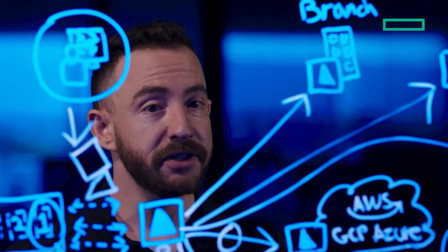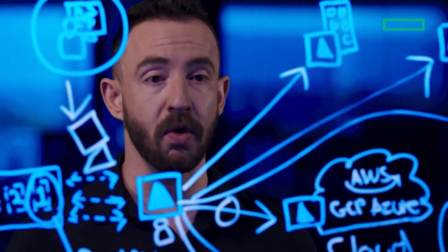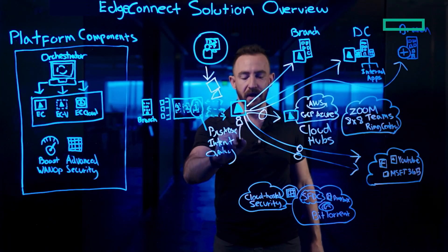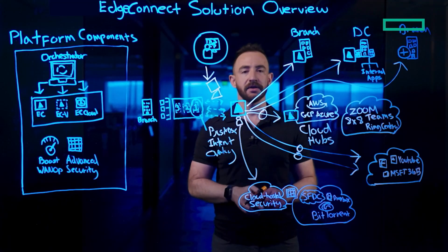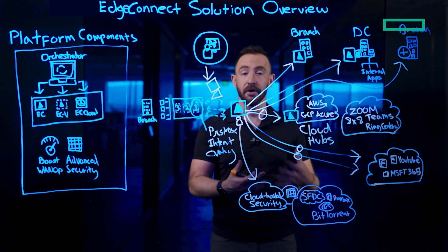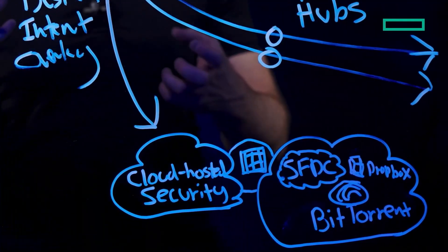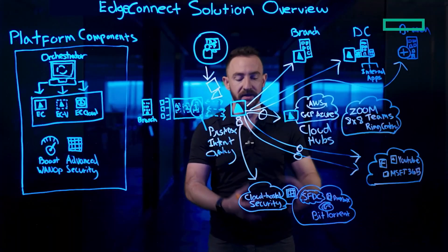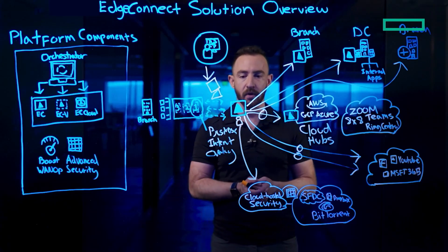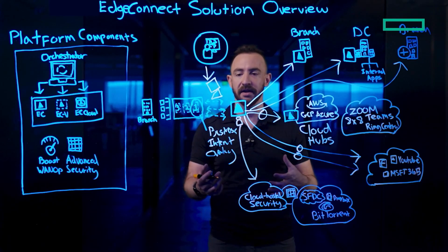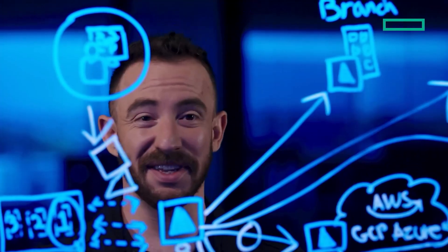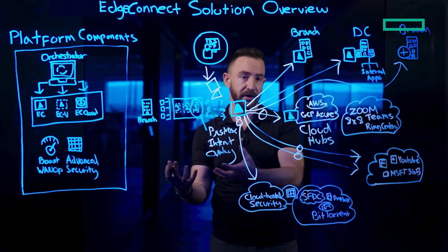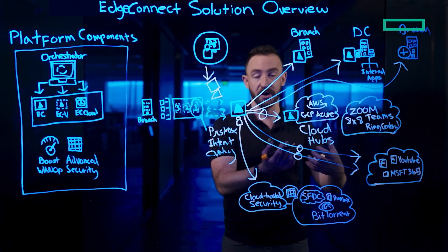For applications that require deeper inspection, or for connectivity to mobile or home users, EdgeConnect includes simple one-click service chaining to best-of-breed cloud-hosted security partners. You may want to steer particular apps such as Salesforce or Dropbox to a cloud-hosted security provider for more advanced capabilities such as DLP — for example, to make sure that employees aren't transferring corporate files from their corporate Dropbox to their personal Dropbox accounts.